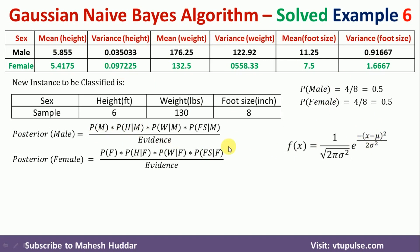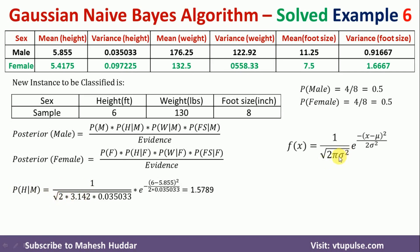To calculate P(height|male), we apply the Gaussian formula: 1 / sqrt(2 × 3.142 × variance of height given male), where the variance is 0.035033, multiplied by e raised to −(x − mean)² / (2 × variance). Here x = 6, mean of height given male = 5.855, and variance = 0.035033. Once you plug in this particular value, you get P(height|male) = 1.5789.